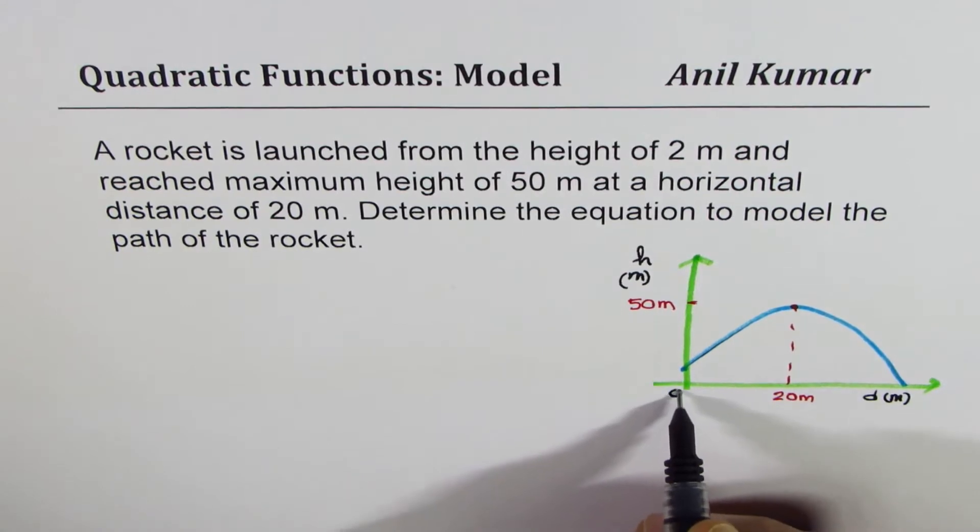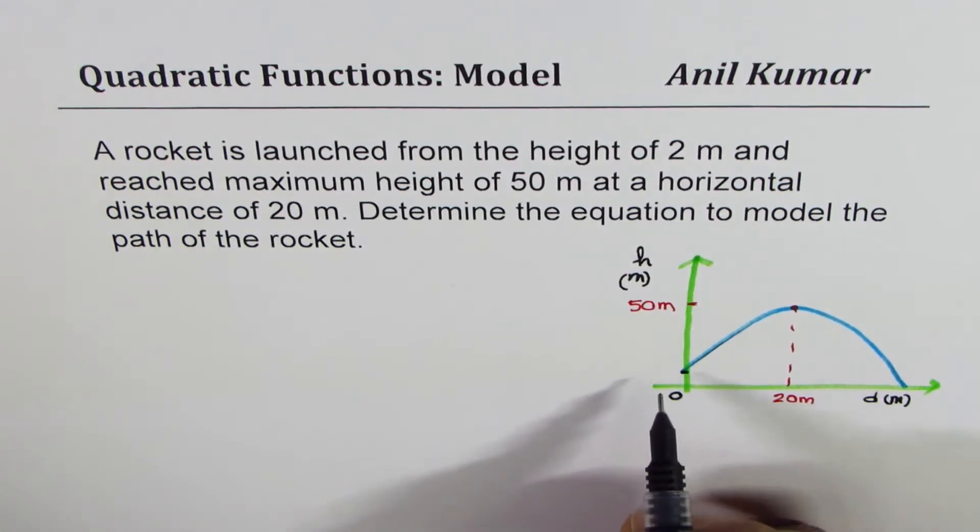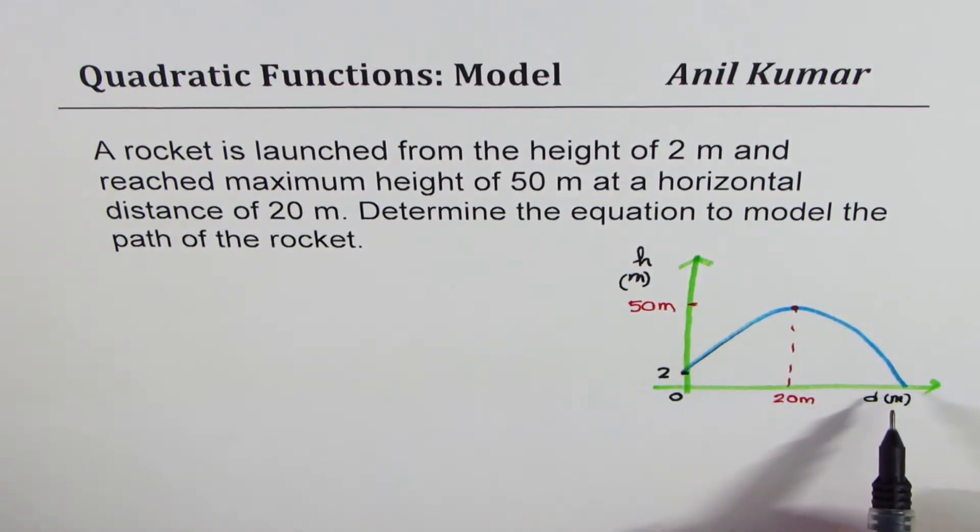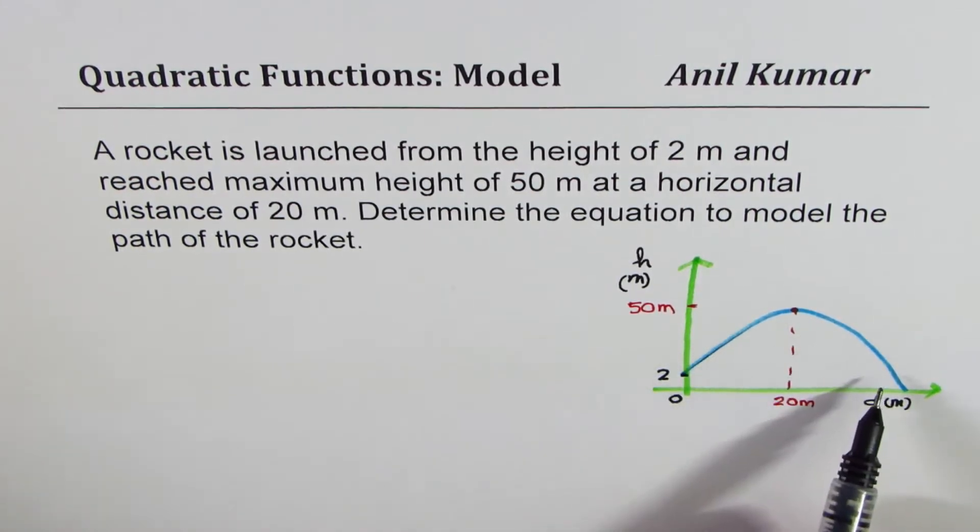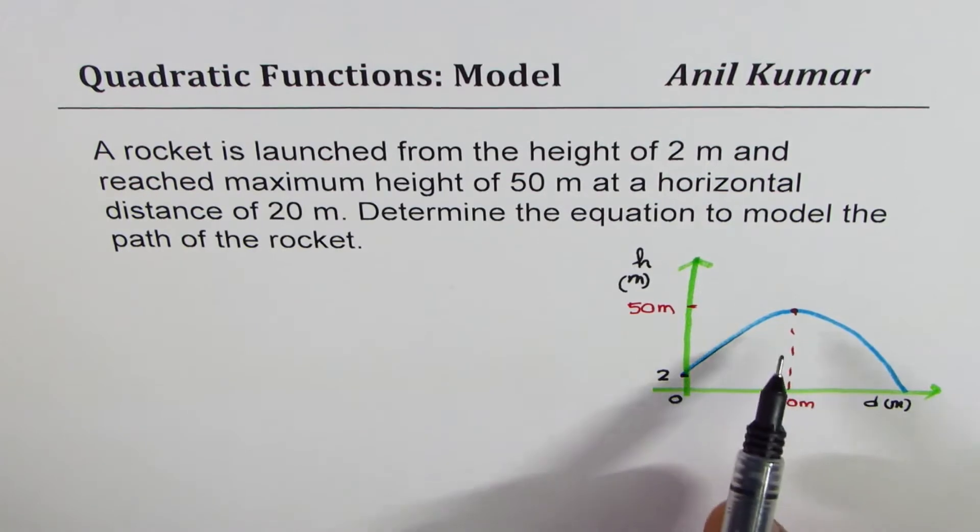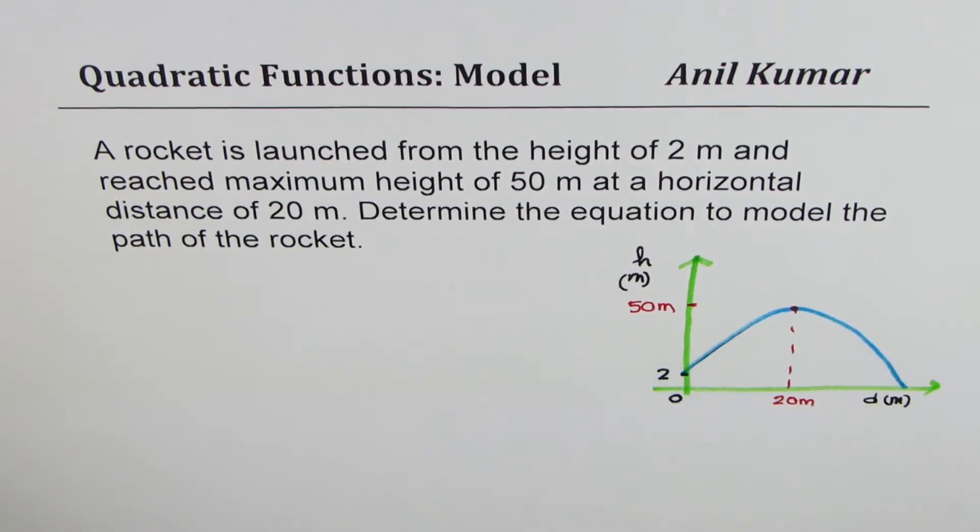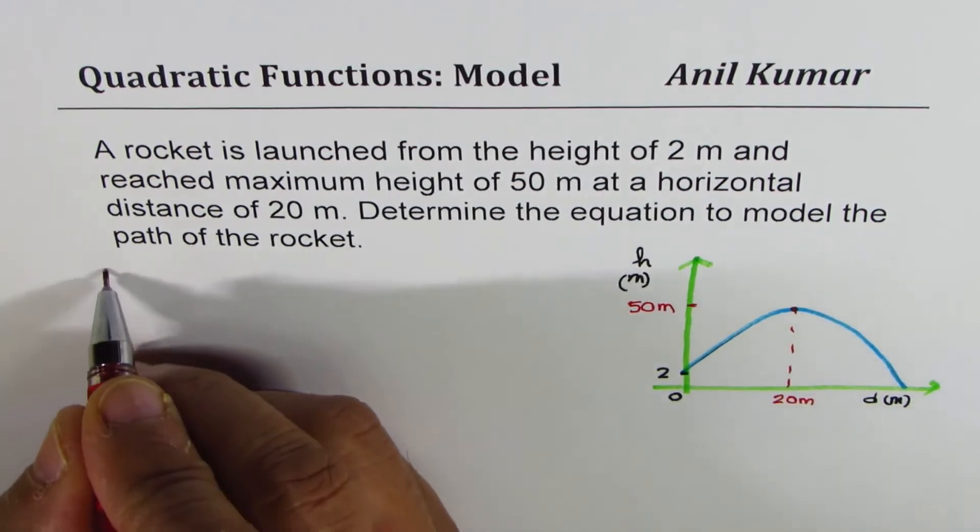Taking this as the origin, initial point is 2 meter high. So that becomes a projectile path and this can be very easily modeled with the help of a quadratic function. Now we have a couple of choices to use quadratic functions. Whenever a vertex is given, we will use the vertex form.